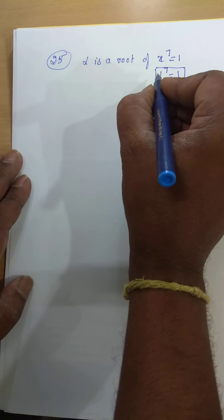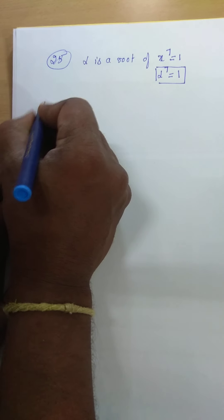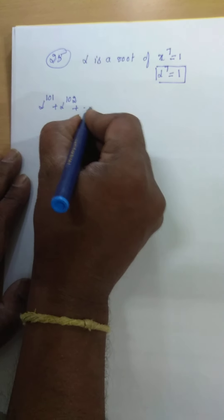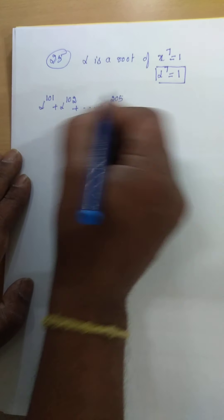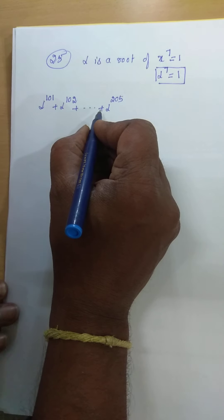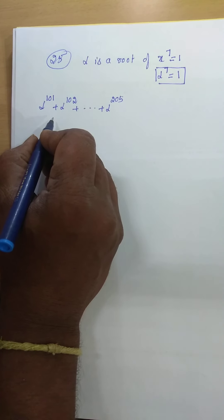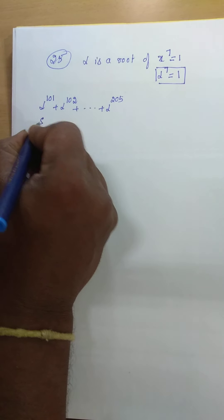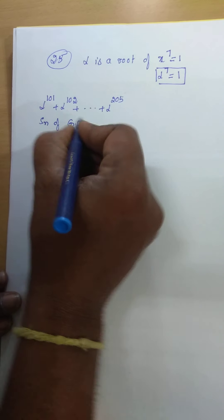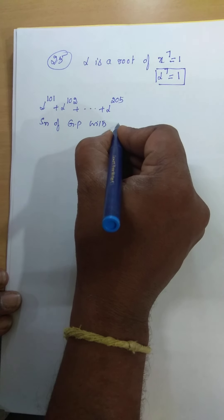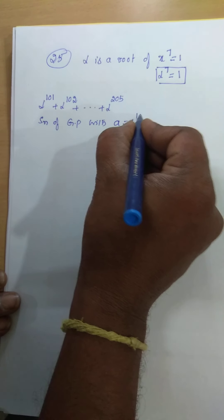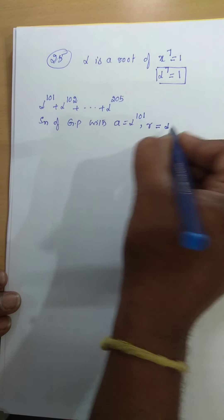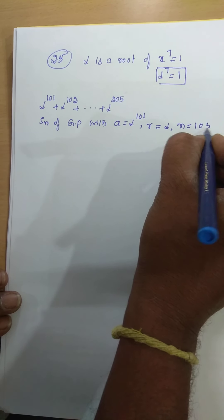What is the next thing here? The value of alpha power 101, plus alpha power 102, plus so on, plus alpha power 205. The value — alpha power 101 is the first term, common ratio r is alpha only, and number of terms n is 105 terms.